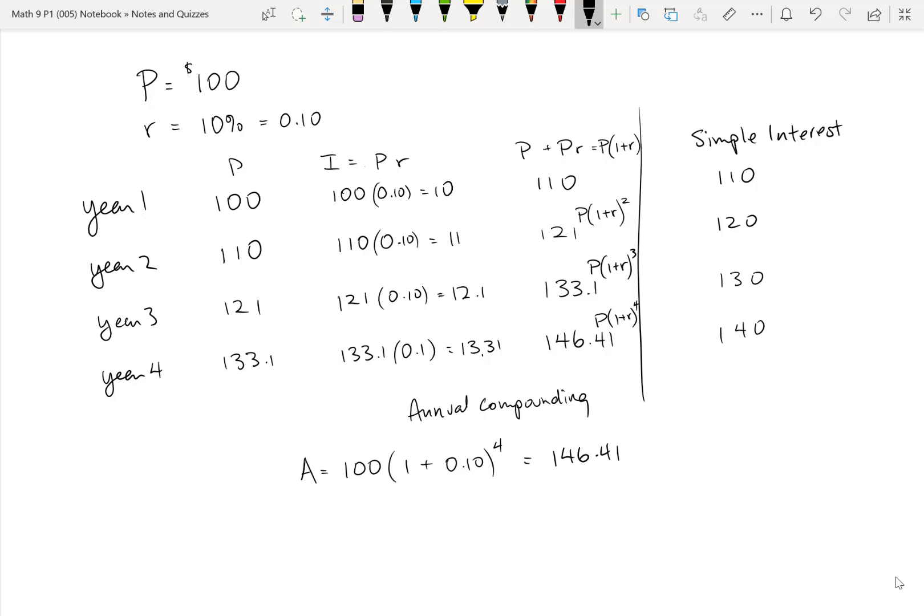Now, if we go any further, we're going to get more decimal places. So since we're dealing with money here, it makes perfect sense just to round this to the nearest penny. In other words, to two decimal places if we're representing it as dollars. So in this case, it comes out to exactly $146.41. But if you went any further, you'd have to round it.